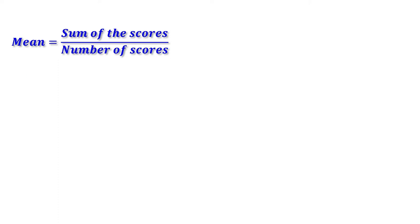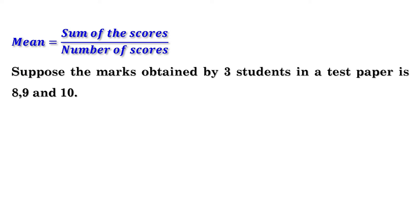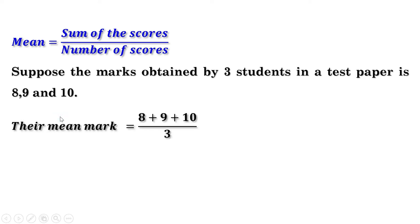For example, suppose the marks obtained by three students in a test paper are 8, 9, and 10. In order to find the mean, we have to add all these marks together, and since there are three scores, we have to divide the sum by 3. That is, mean mark is (8 + 9 + 10) / 3. 8 plus 9 is 17, and 17 plus 10 is 27. So we can write this as 27/3 = 9.